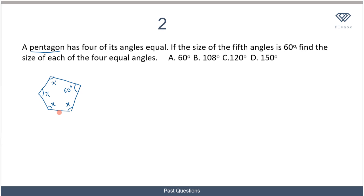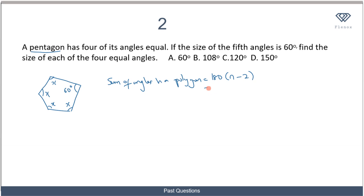The first thing we want to do is find the sum of all the angles. If you recall, the sum of interior angles in a polygon is equal to 180 times (n minus 2). Since we have a pentagon, which is a five-sided figure, the total sum of interior angles is 180 times (5 minus 2), which is 180 times 3, equal to 540 degrees.